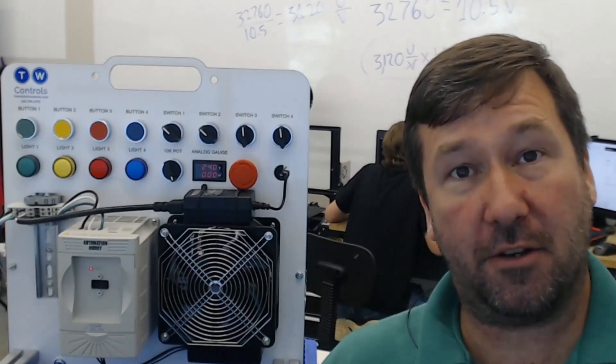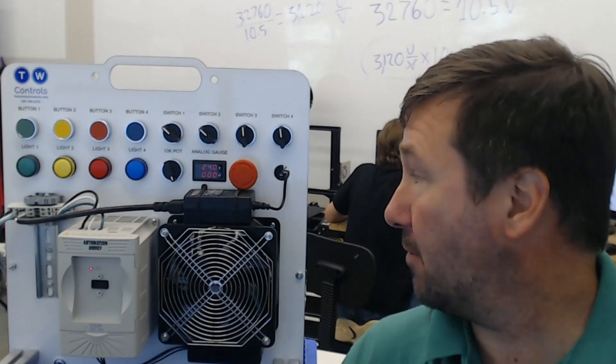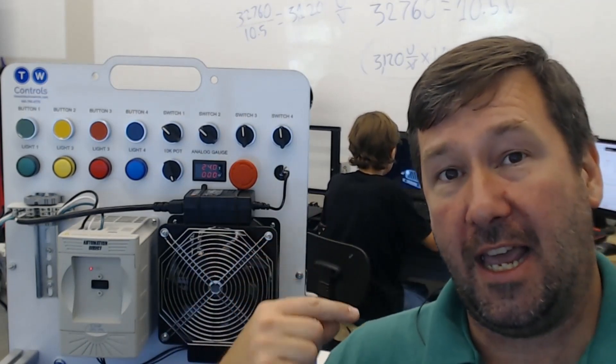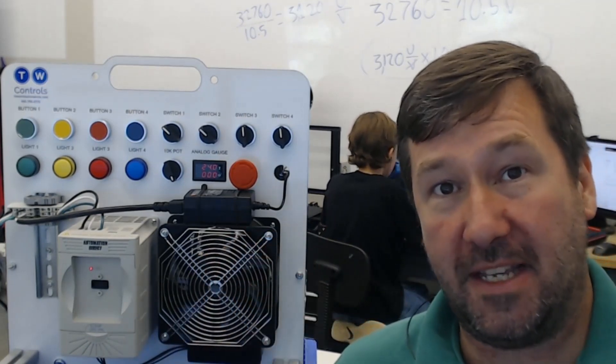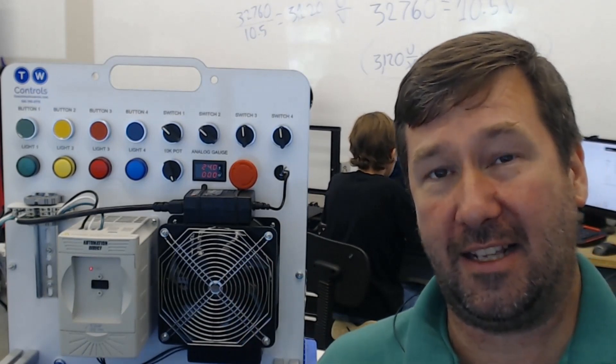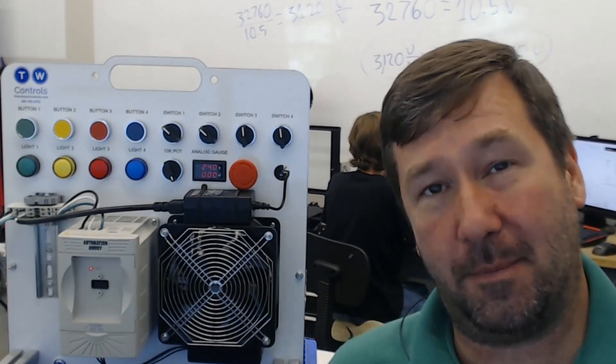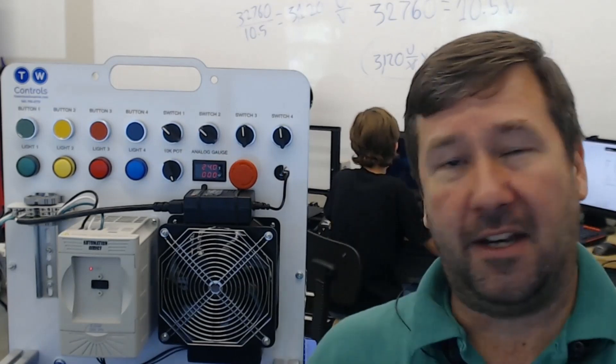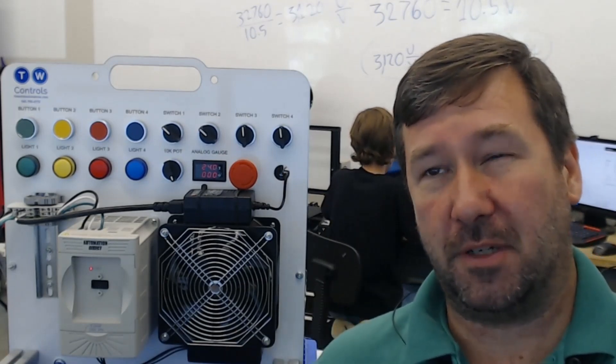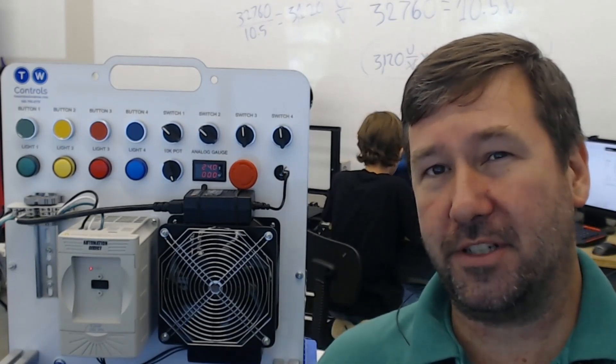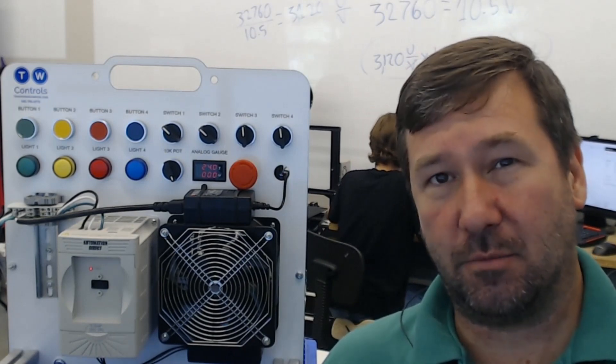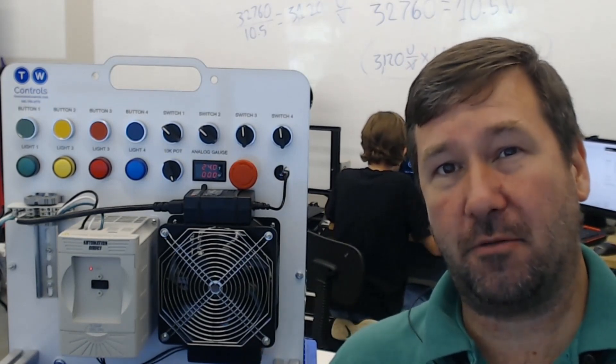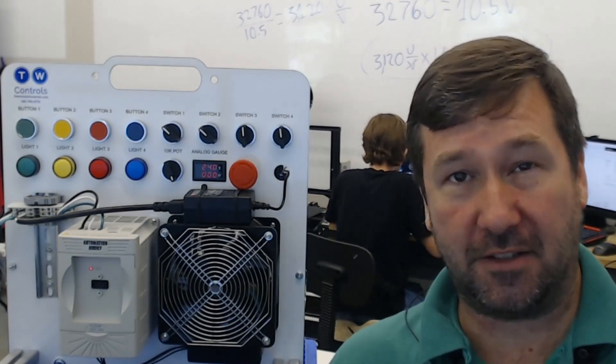So we went through how to calculate for the 7k resistor to make this 10 volt, and another question came in saying okay that's neat but I still don't get how the potentiometer actually worked. Now I know we're supposed to move on to milliamps this week, but with those two questions I really just felt we needed to spend a little more time on this just so we make sure that we do understand how this works.